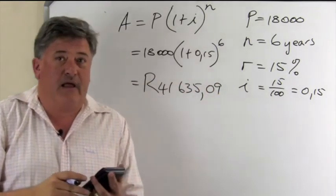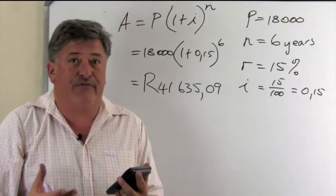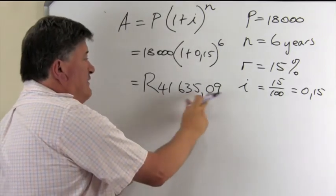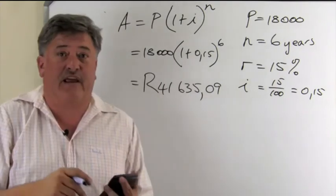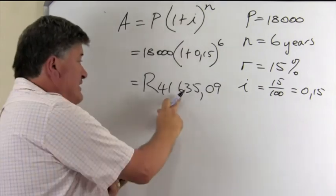You push equal and your answer then is 41635.09. So, the amount at the end of the period or the future value is 41,635 rand and 9 cents. So, that 18,000 rand will grow to this amount.